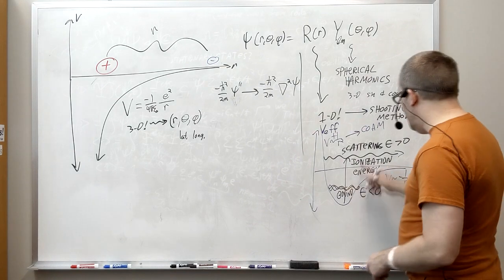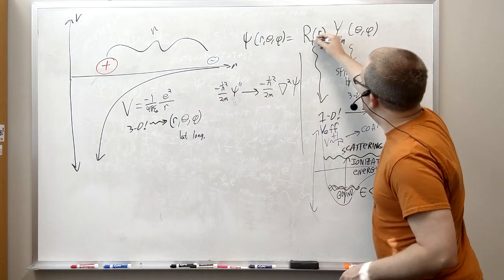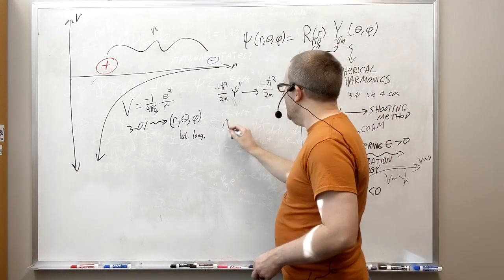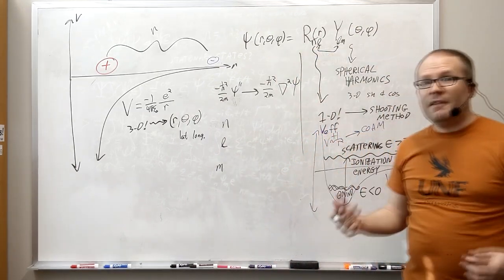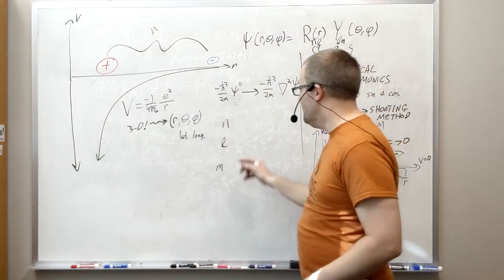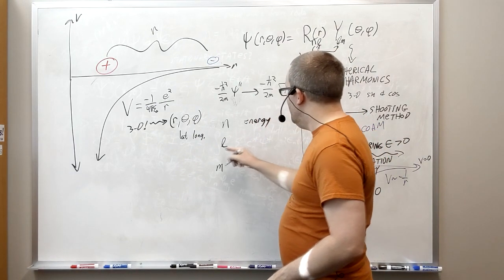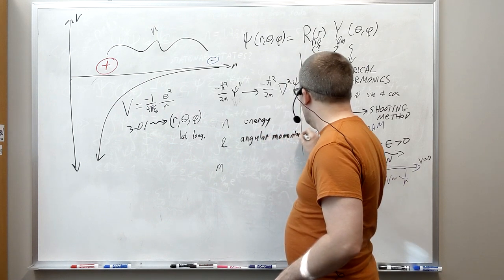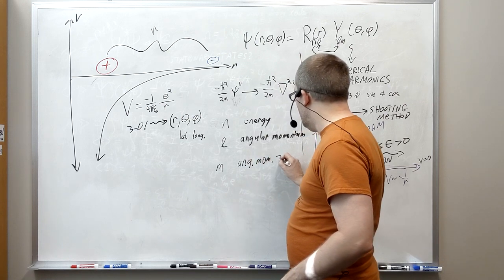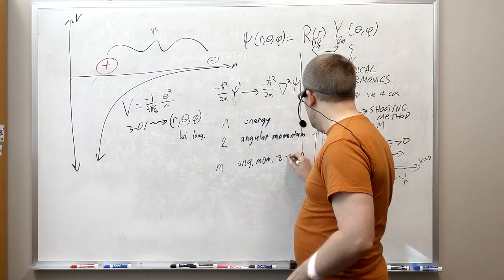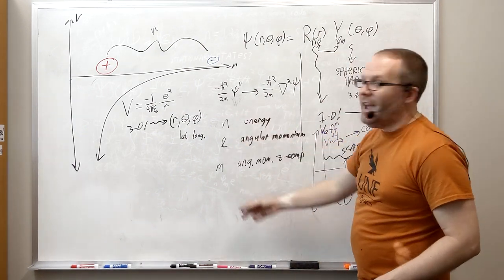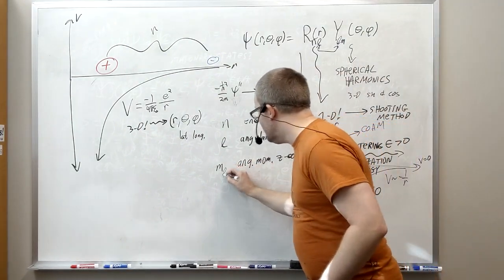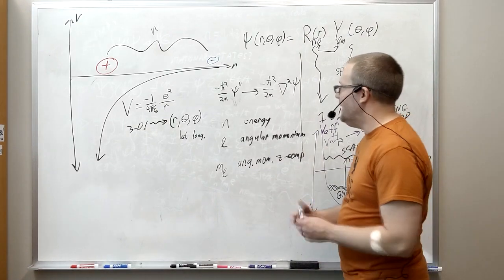One other thing I'll point out, these bound states, they get labeled by an integer - they get labeled by n, l, and m. This n, l, and m, this is the stuff that you know from your chemistry class as your quantum numbers. This is the energy level. This is the angular momentum number. And this is the angular momentum z component. And so if you've taken a chemistry class, you recognize these as those orbital values that label the orbitals. Quantum mechanics is where those come from.